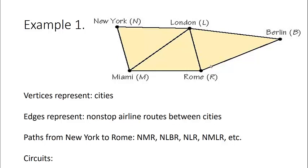What about circuits? Circuits, remember, are simply paths that start and end at the same vertex. An example of a circuit for this graph would be Miami, Rome, London, Miami. Another: Rome, London, New York, Miami, Rome. So these are circuits. They're paths that start and stop at the same vertex.